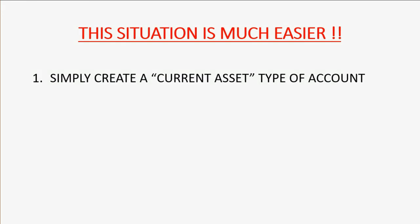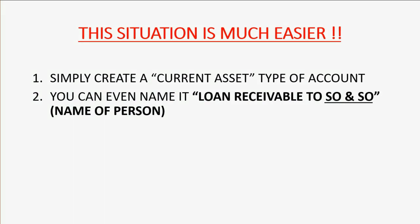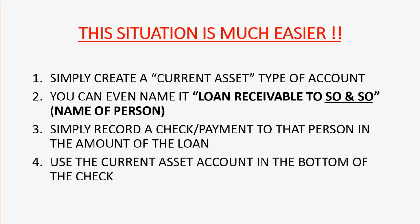All you have to do is create a current asset type of account — you can even name it 'Loan Receivable to Mr. So-and-So' or whoever. Simply record the check or the payment to that person in the amount of the loan you're giving, and use the current asset account you just created at the bottom of the check.